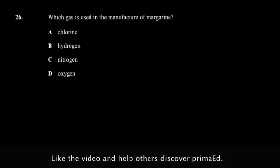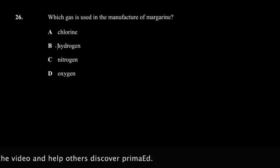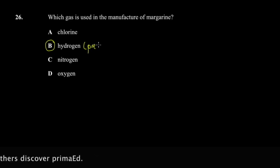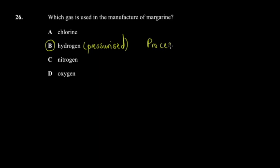Question 26: which gas is used in the manufacture of margarine? The answer is pressurized hydrogen. The process is called hydrogenation. You take oil and introduce hydrogen, which gives the product its solid, spreadable consistency — that's what makes it butter-like and spreadable on bread.